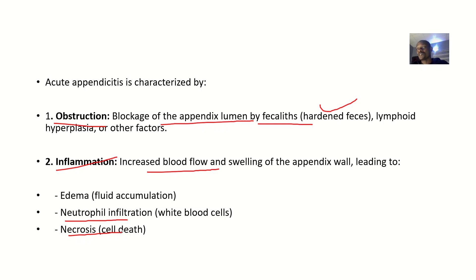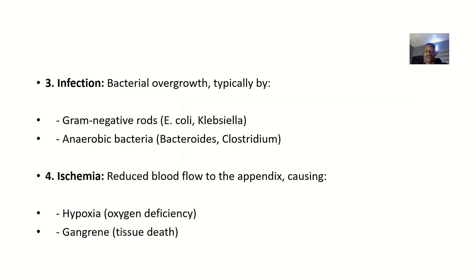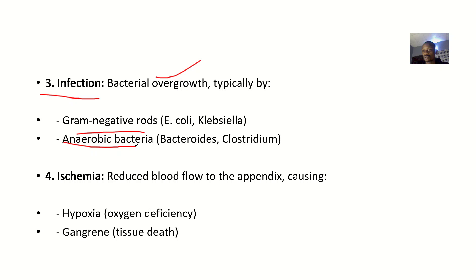The neutrophils arrive because the inflammation can attract them, and this can also lead to cell death in the process. This is followed by infection, where there is bacterial overgrowth. Typically, the types of bacteria involved are gram-negative rods like Escherichia coli and Klebsiella, as well as anaerobic bacteria like Clostridium.